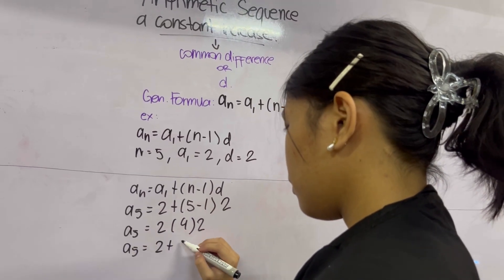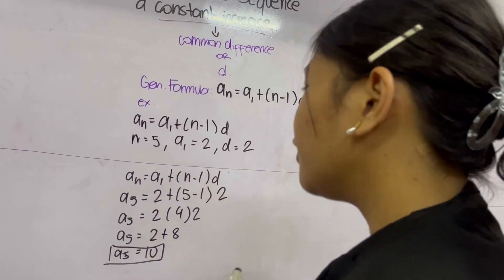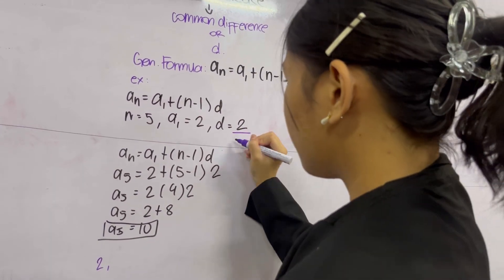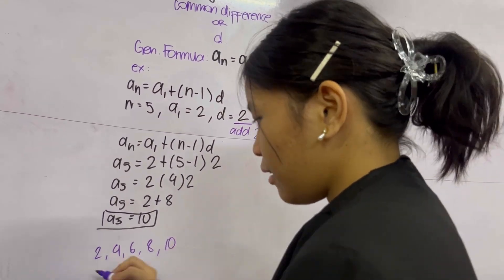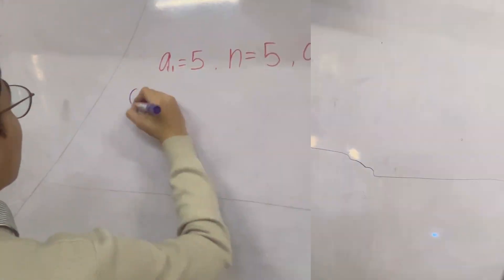To prove this, we can simply add 2 to every term until we get the 5th term. So, 2 plus 2 equals 4, plus 2 again gives 6, then 8, and then 10. This proves that the answer is correct.